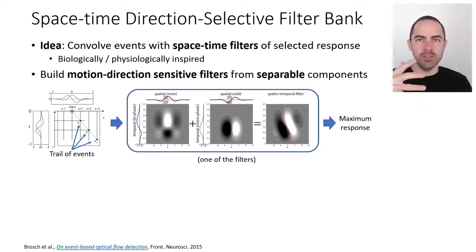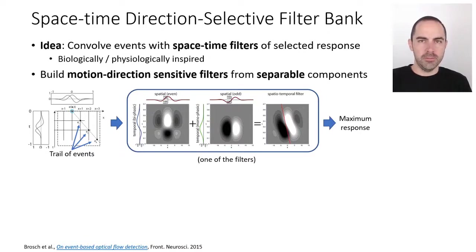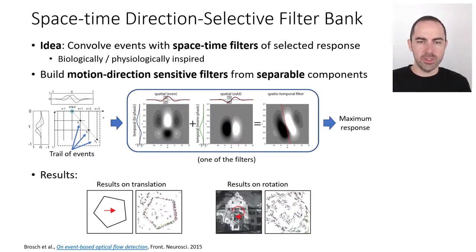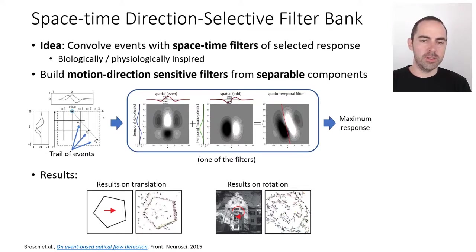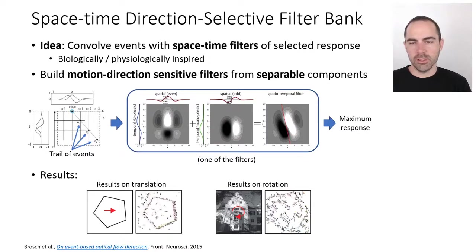With many filters in the bank, the input signal passes through all of them, producing many outputs. The space-time characteristic of the input is identified by finding which filter has the highest response. Results on translation and rotational motion show it's possible to estimate flow vectors from events. When there isn't enough texture, only the normal flow can be estimated, but with more complex texture the full flow can be estimated.